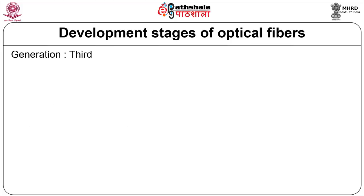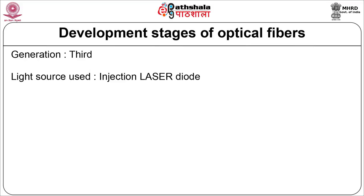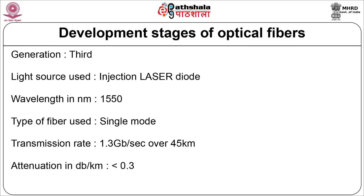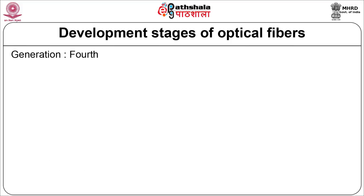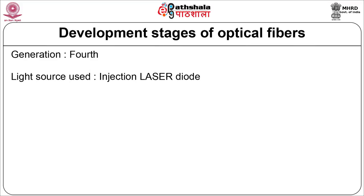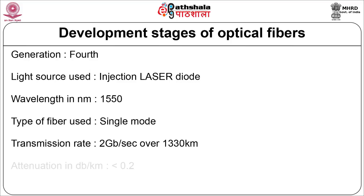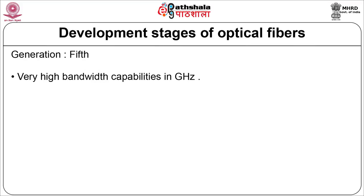In the third generation, the light source used is again an injection laser diode, wavelength is 1550 nanometer, single mode fiber is used, 1.3 GB per second over 45 km is transmitted, and attenuation is less than 0.3 dB per km. In the fourth generation, light source is injection laser diode, wavelength is 1550 nanometer, single mode fiber used, transmission rate is 2 GB per second over 1330 km, and attenuation is less than 0.2 dB per km. In the fifth generation, very high bandwidth capabilities of the order of gigahertz.